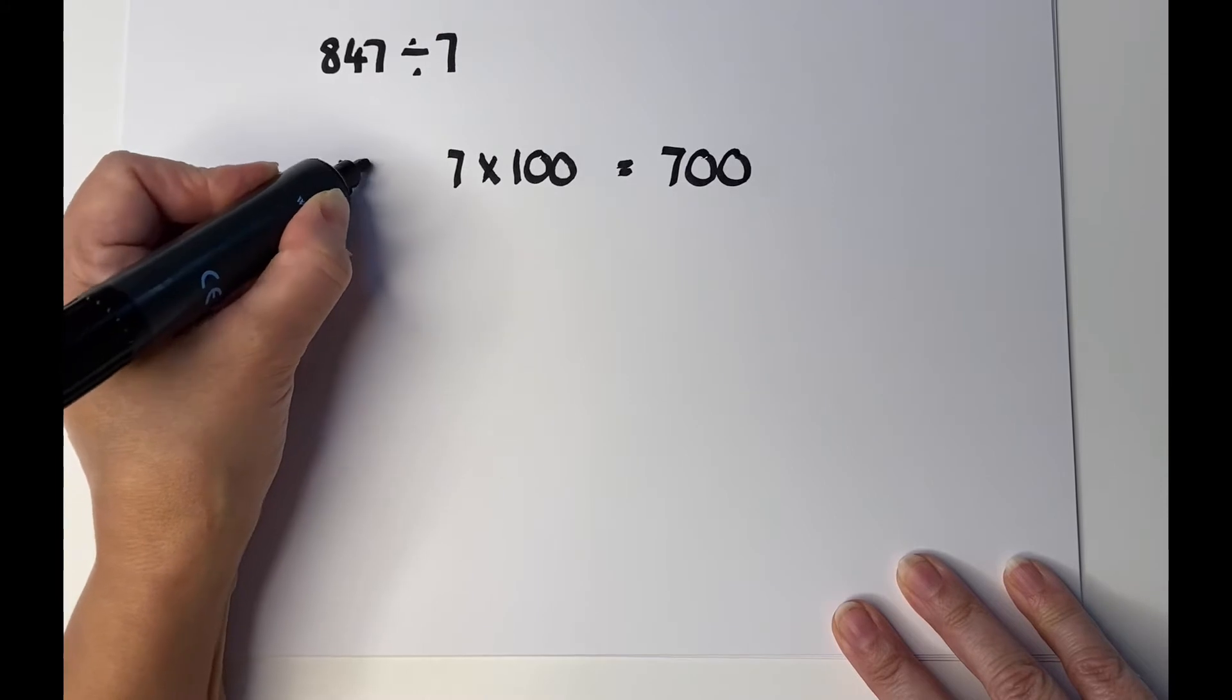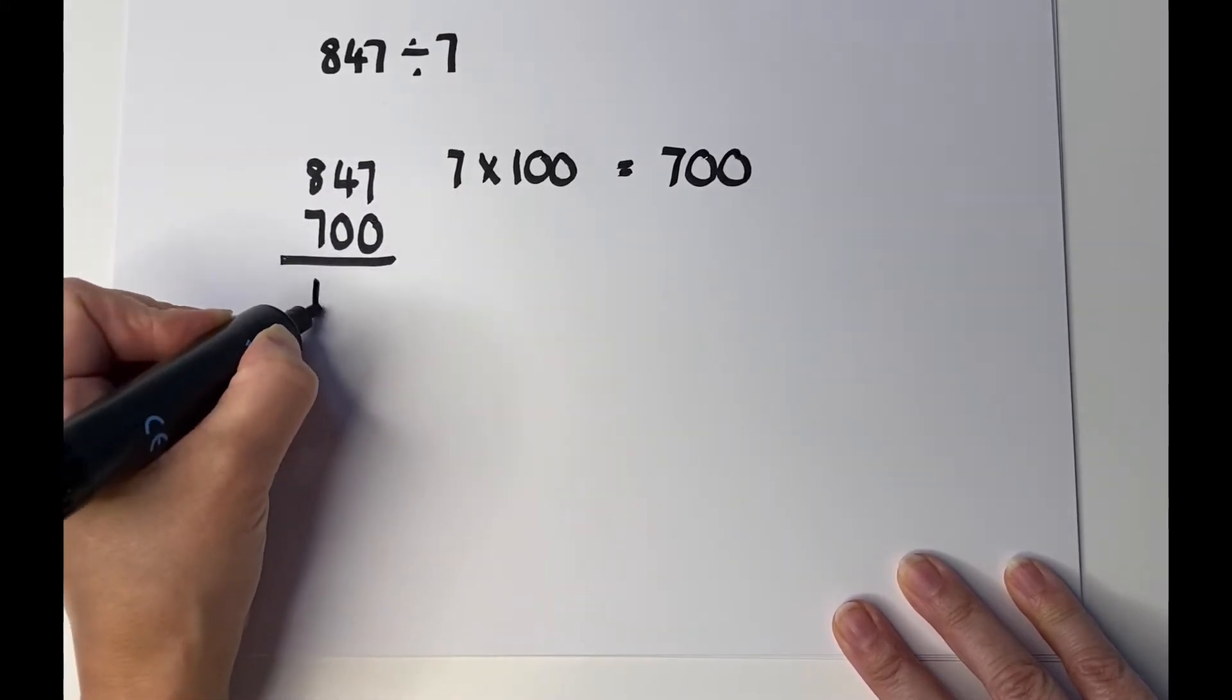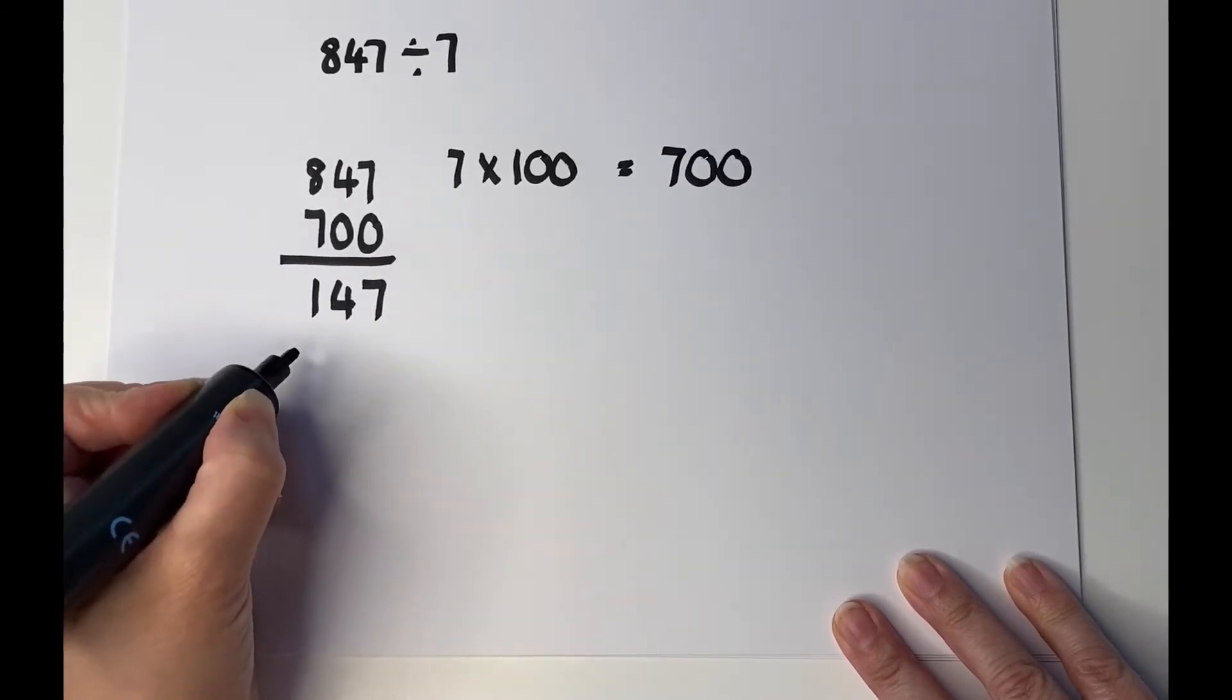So we'll do 847, we're going to take our 700 away, that leaves us with 147.